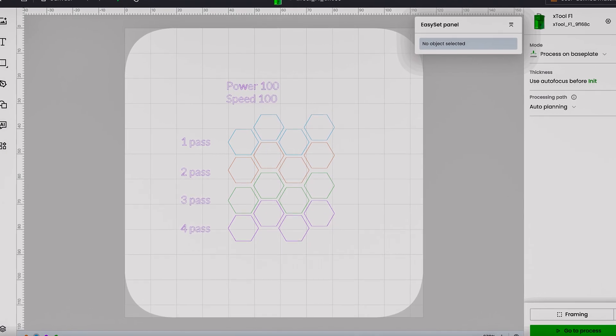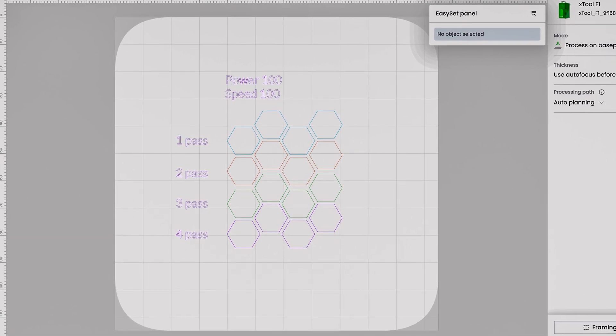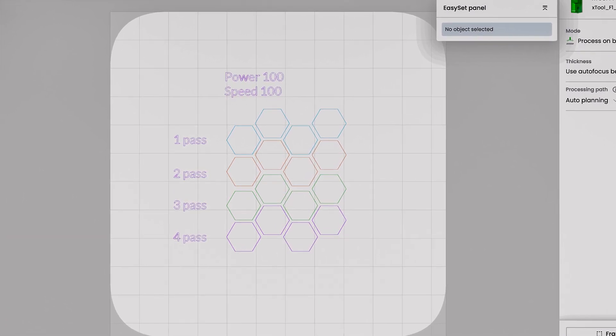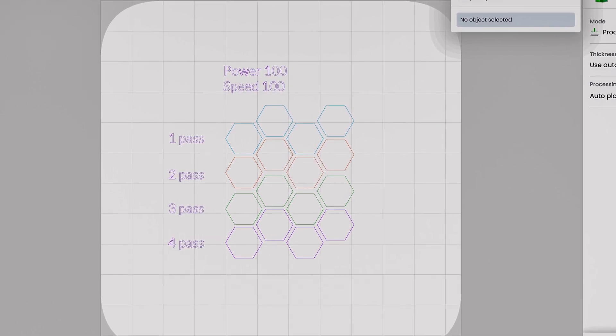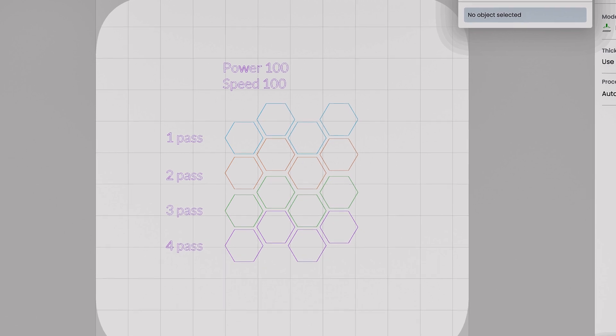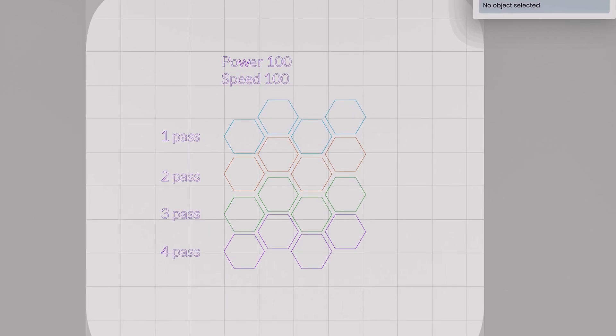We also set up a separate test with larger shapes that were closer together. Here we kept speed and power settings the same at 100 millimeters per second and full power, but instead we set groupings of these shapes to be laser scored for 1, 2, 3, and 4 passes at otherwise identical settings.